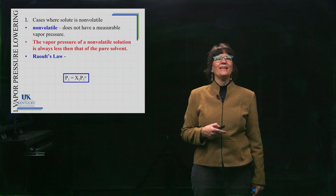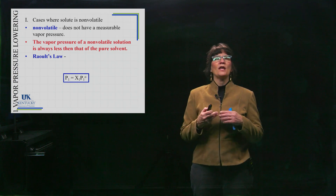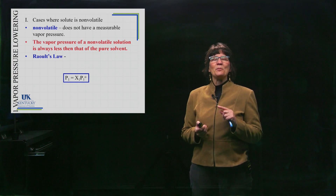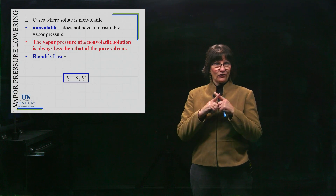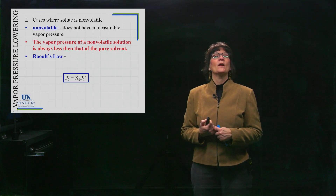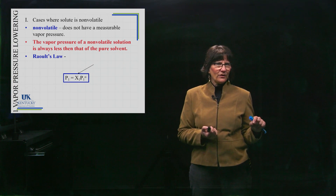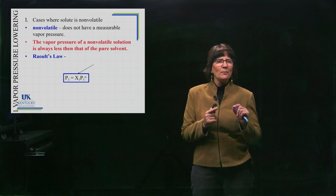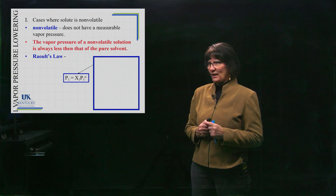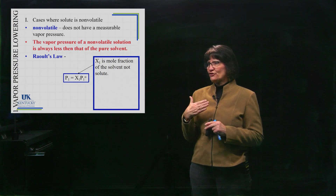Raoult's Law is the mathematical relationship for this. The equation gives the vapor pressure of the solvent above the solution: P₁ = χ₁ · P₁°, where P₁° with the circle is the vapor pressure of the pure solvent. The χ (chi) is the mole fraction we learned about when discussing concentration units. Notice that both P and χ carry subscript 1 — we're talking about the same substance, the mole fraction of the solvent, not the solute.